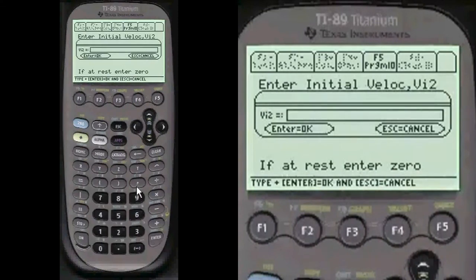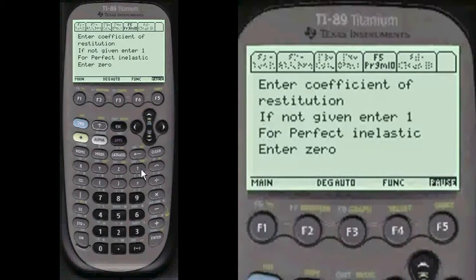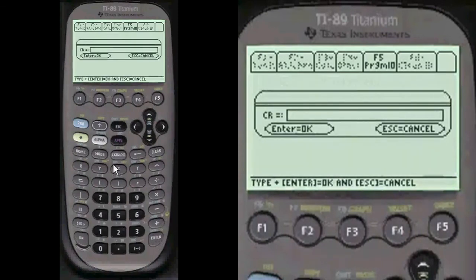And we have the initial velocity of mass 2, which is at rest. So if it's at rest, we enter 0, alpha 0. And coefficient of restitution, if it's not given, just enter 1, alpha 1.